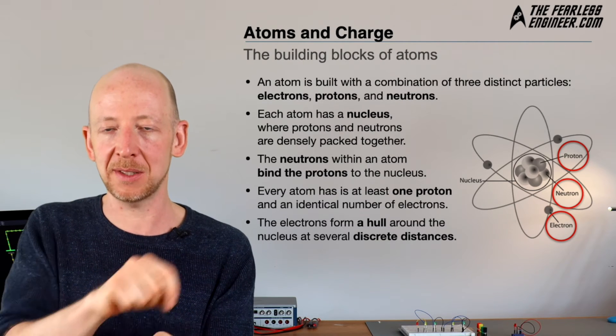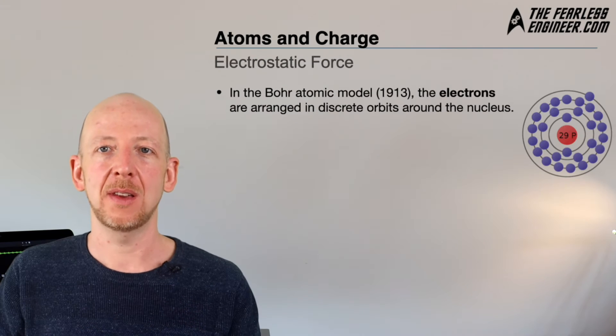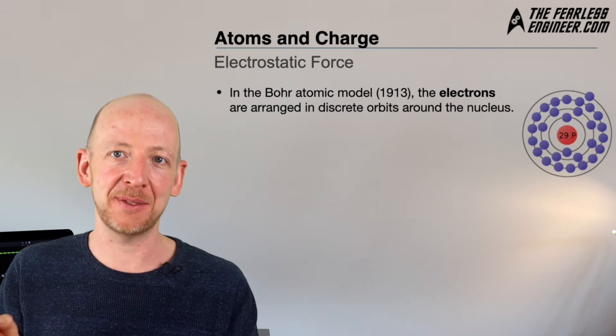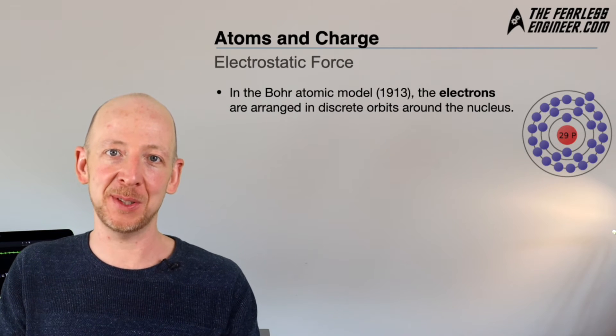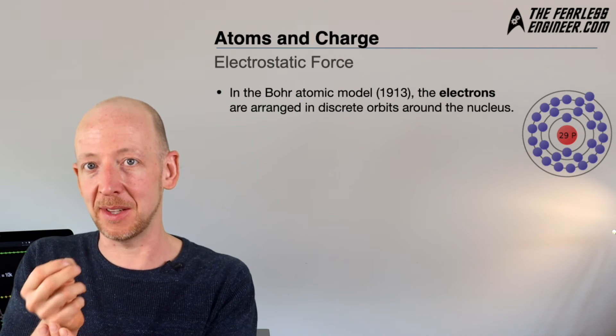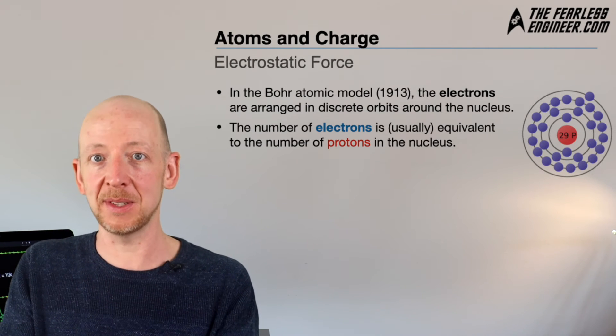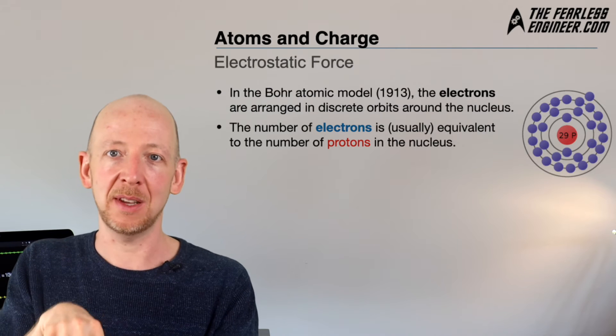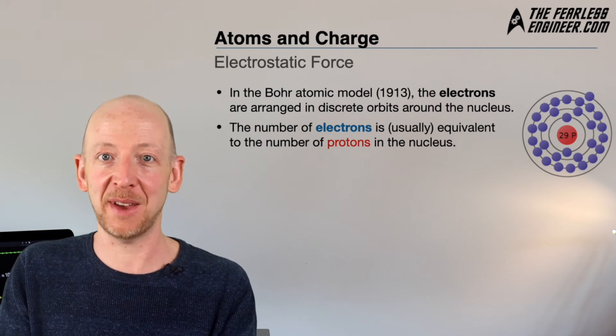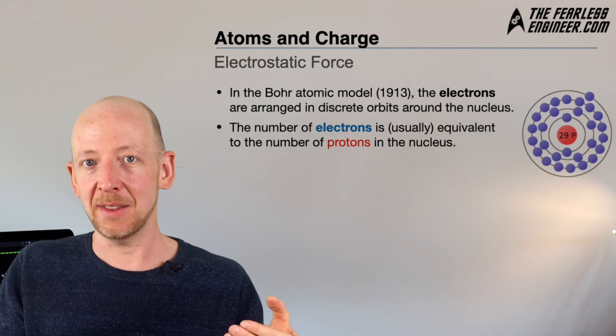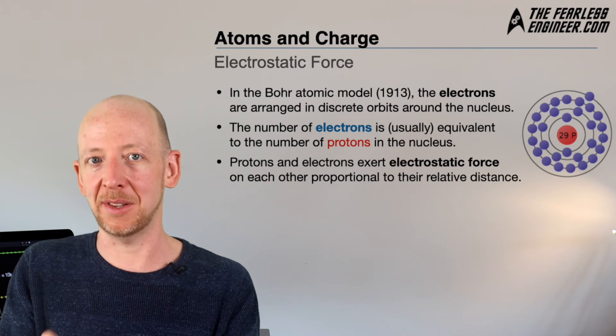Here you can see the famous Bohr atomic model, proposed in 1913, which shows electrons arranged in discrete orbits around the center nucleus depicted in red. The number of blue electrons around the nucleus is usually equivalent to the number of protons in the nucleus. What's interesting from the perspective of electronics is that protons and electrons exert an electrostatic force on each other which is proportional to their relative distance.